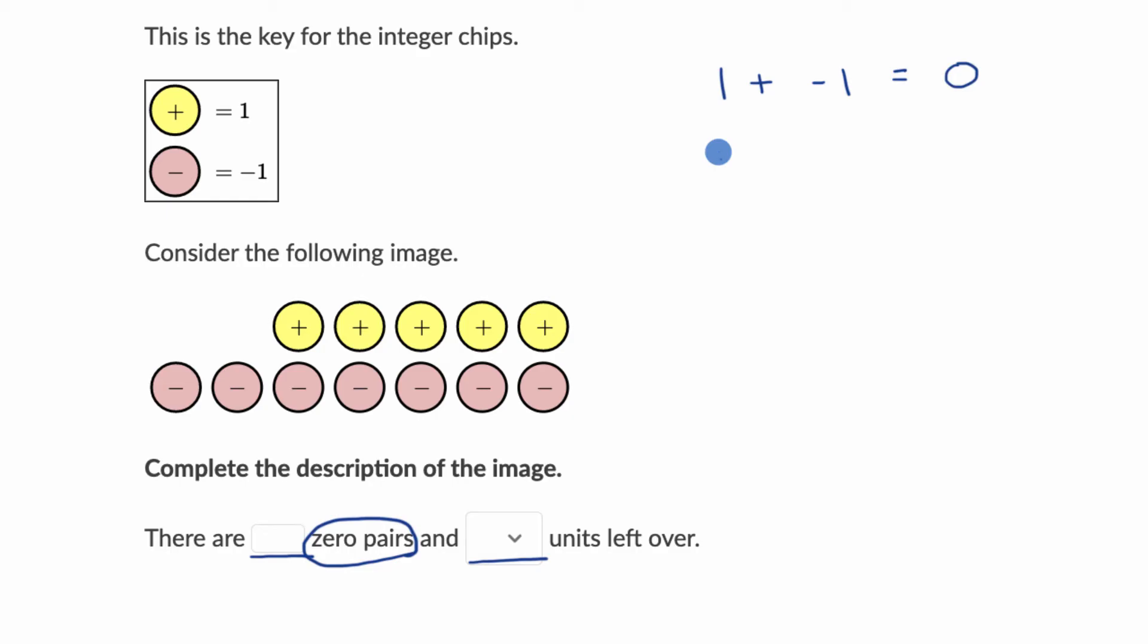You could have other zero pairs. You could have things like positive two plus negative two. That's also a zero pair. You walk two steps forward and then two steps backward. That's just going to get you back to where you were before. You will not have moved after all.